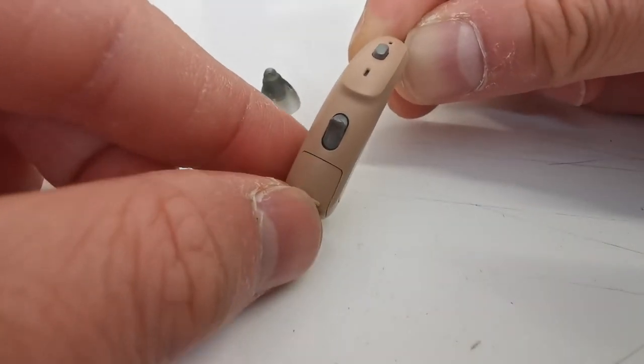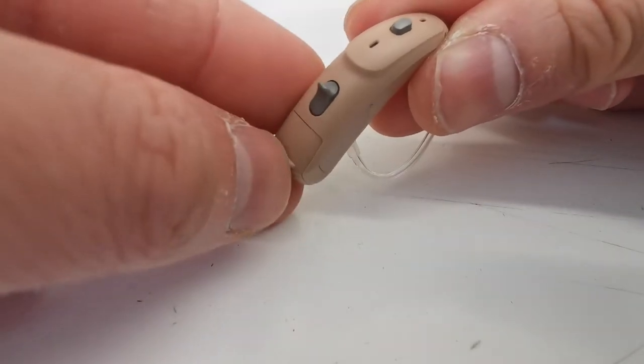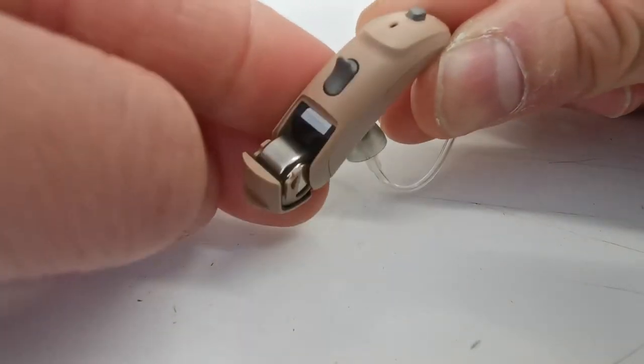You use your nail to pull onto the lip of the battery drawer and simply pull it open.